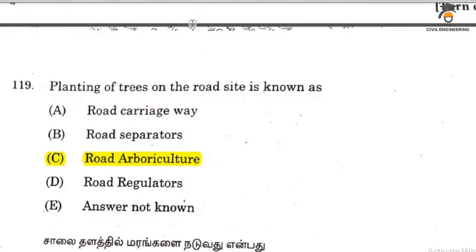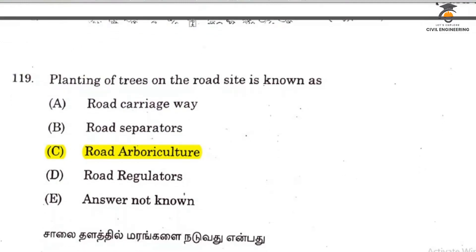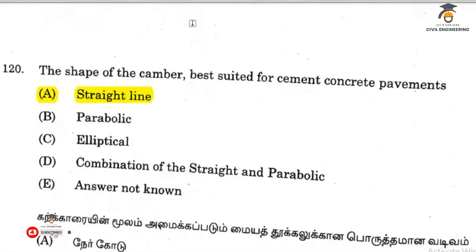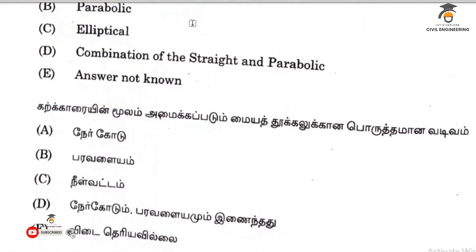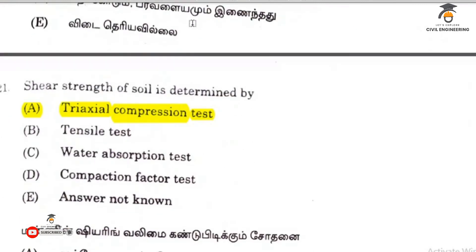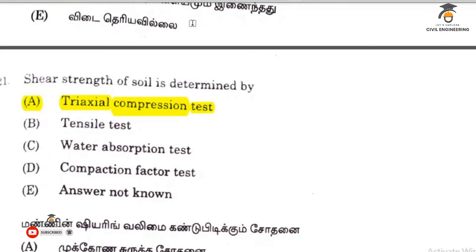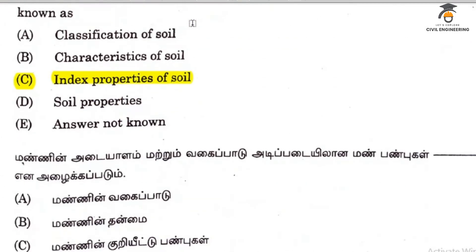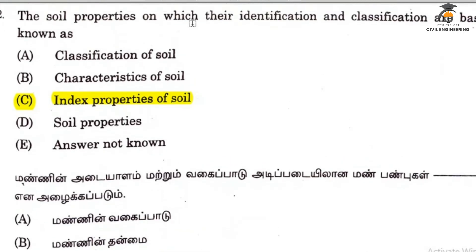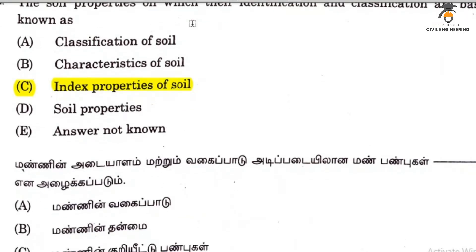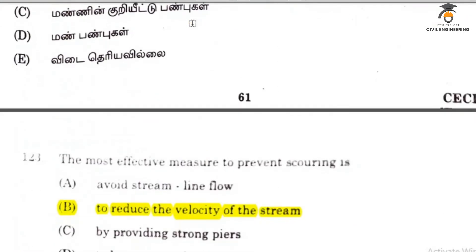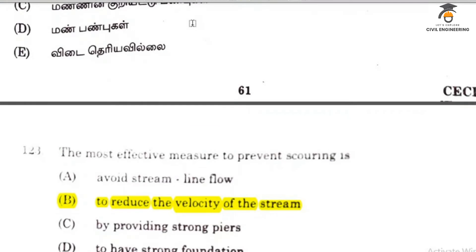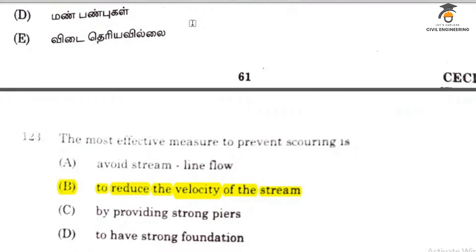Planting of trees on the road is called arboriculture. The shape of a camber on a road is a straight line. Shear strength of soil is determined by the tri-axial compression test. Classification is an index property.